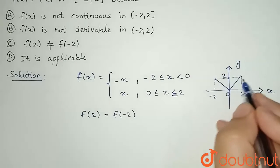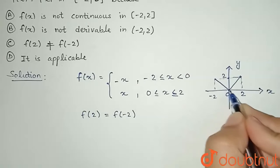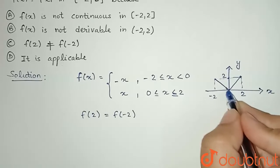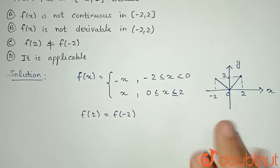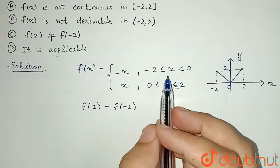And we can see it is continuous also. If you see at 0, if I approach from here, then also it is 0. If I approach from here, this side, then also it is 0. Therefore, I can write that f(x) is continuous.